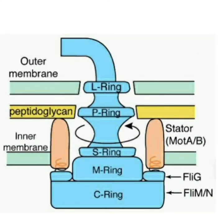In gram-negative bacteria, there are four rings: the outer rings are the L-ring and P-ring, and the inner rings are the S-ring and M-ring. In gram-positive bacteria, only the inner rings — S-ring and M-ring — are present, as they lack the outer membrane.